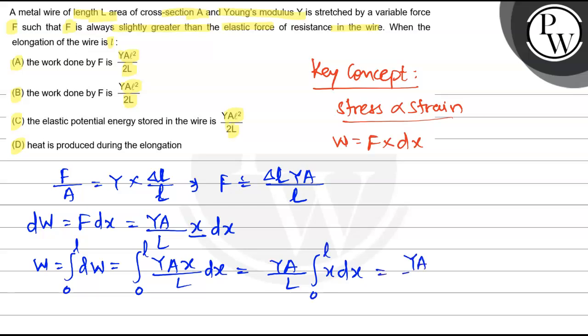This becomes YA/L integration of x dx, which gives x²/2 from 0 to L. Applying upper limit minus lower limit: YA by 2L times L² minus 0. This becomes YAL²/2L. So here is our answer.